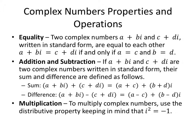So as with anything, we have new numbers, we have a new something. What can we do with it? Two complex numbers, A plus Bi and C plus Di, written in standard form, are equal to each other if and only if their real parts are equal — the A and C — and their imaginary parts are equal — B and D. So they have to have real parts and imaginary parts that line up. Think of them as like terms.